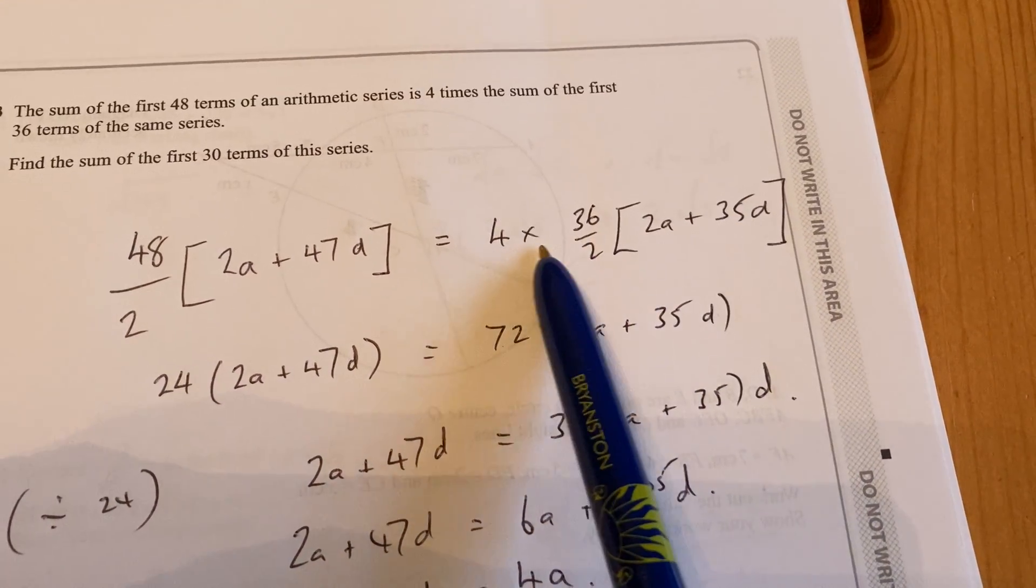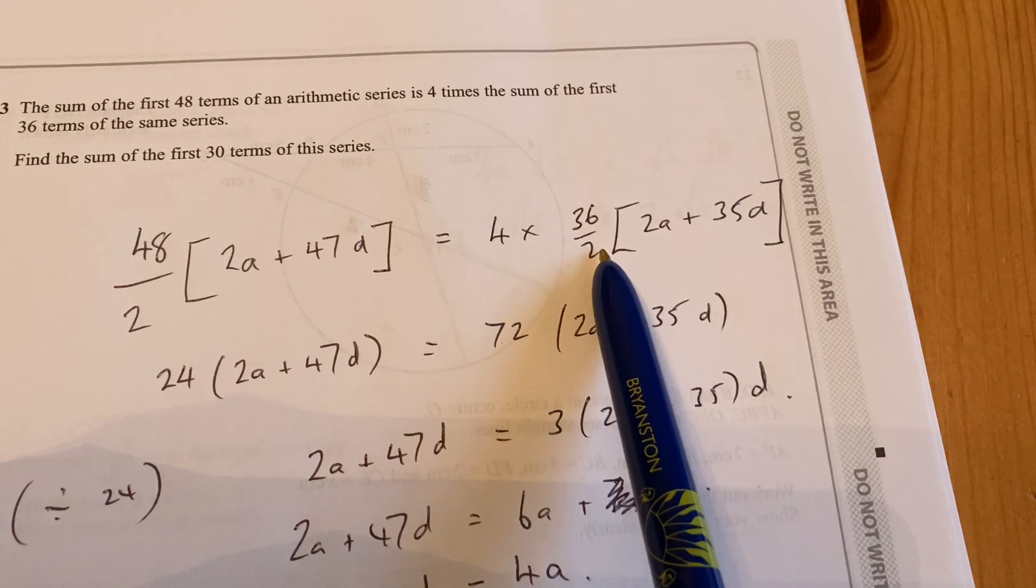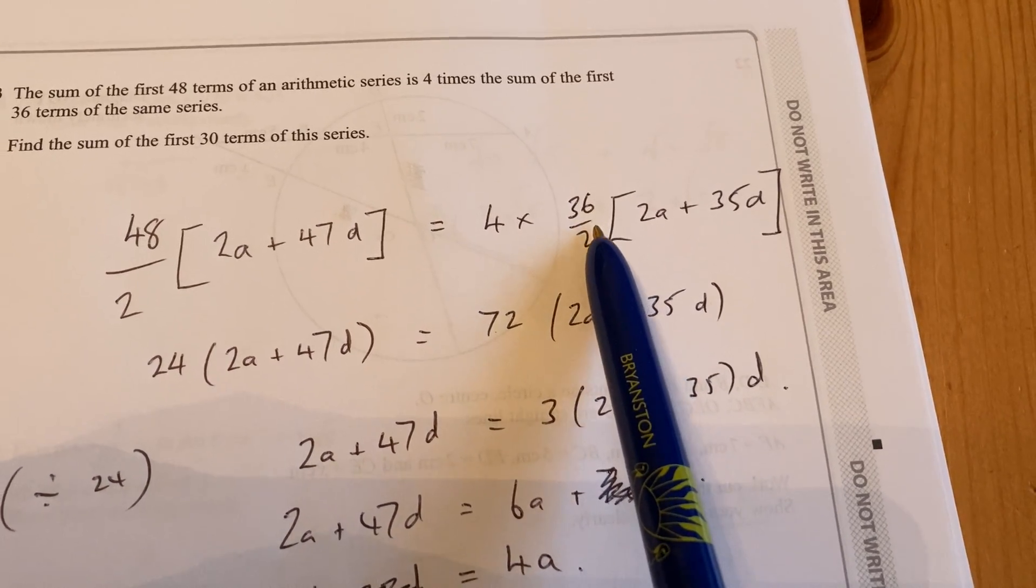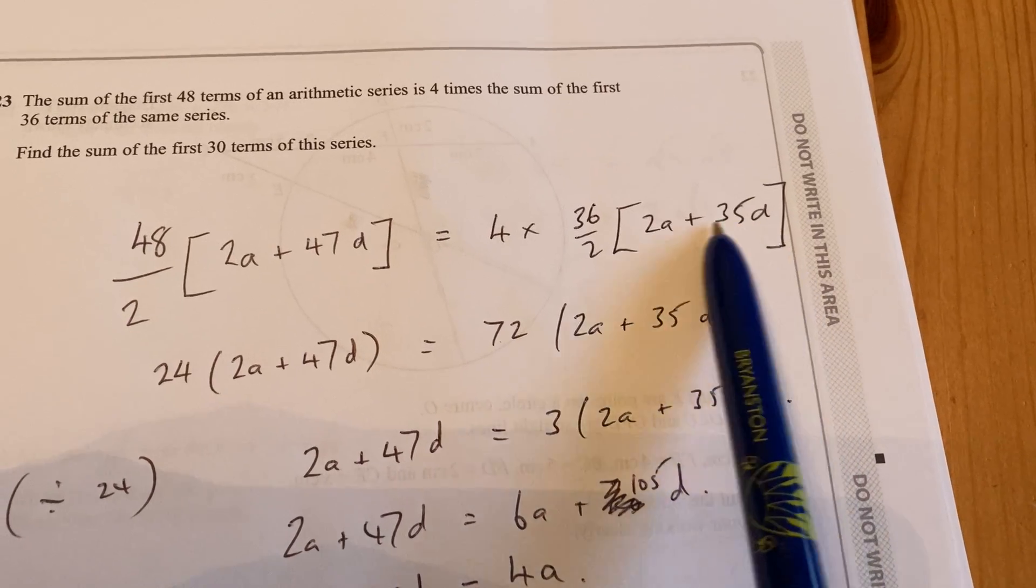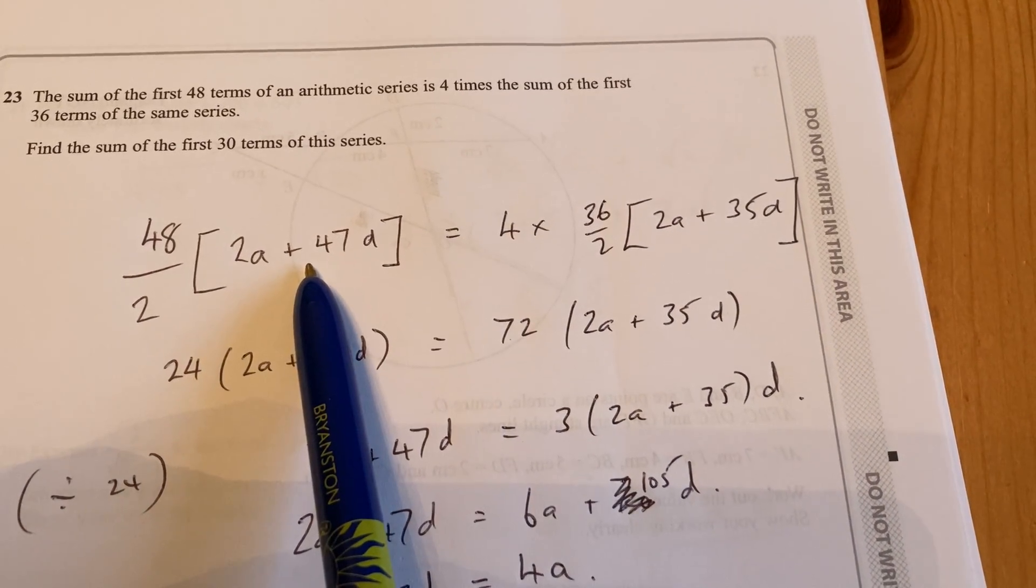Now that is 4 times the first 36 terms. So you can use that formula again to say, for 36 terms, the formula becomes 36 over 2, 2a plus 35d.